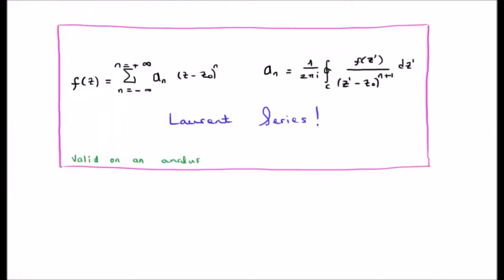This can all be written compactly using a single index n which goes from negative to positive infinity. This is the Laurent series expansion for a function which is not analytic in the region around the pole. So instead of integrating right down to the pole, we in fact have to use an annulus — and that's how we get at it.